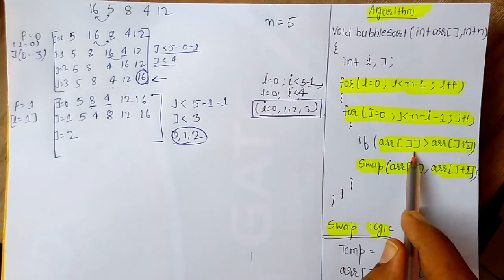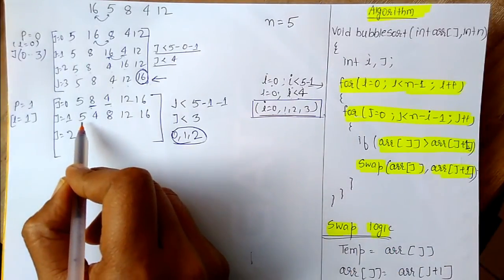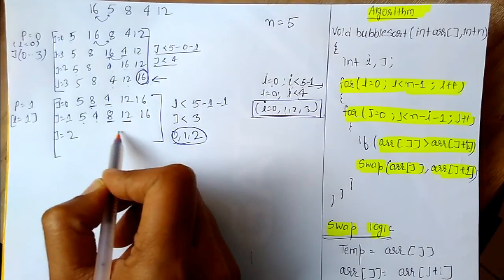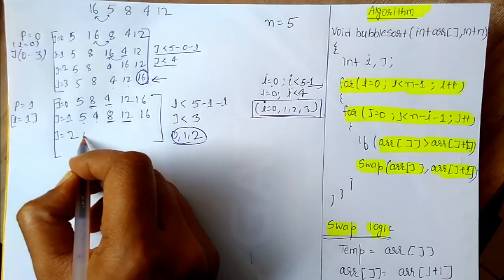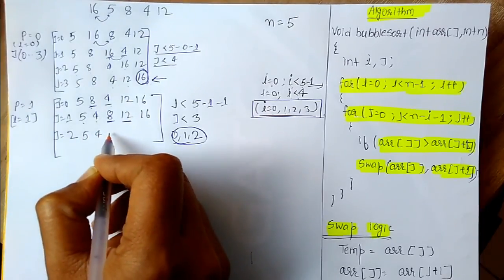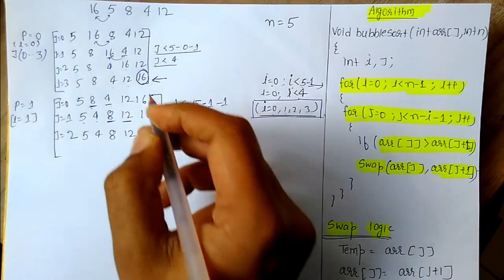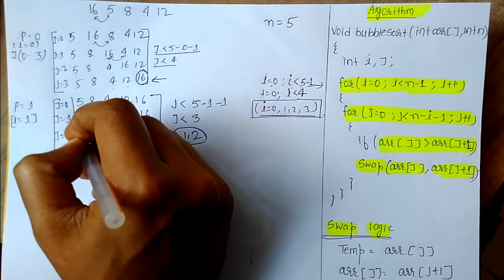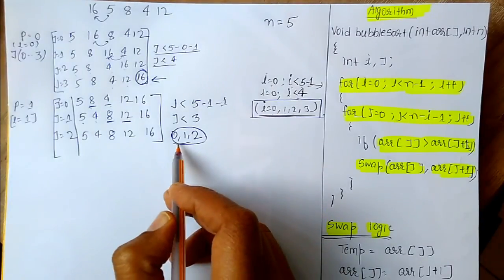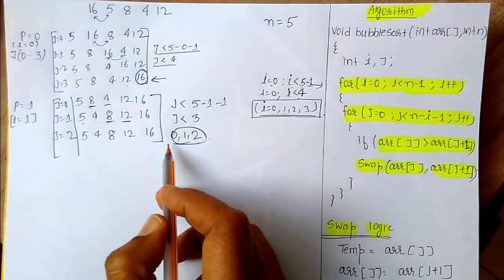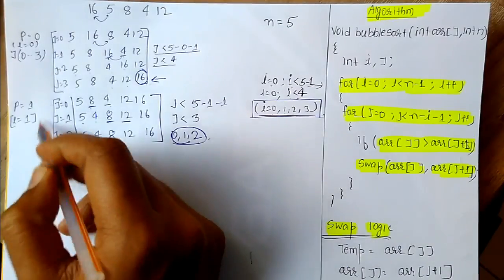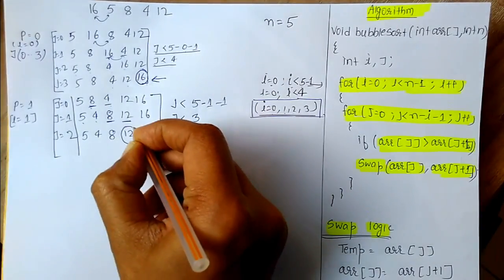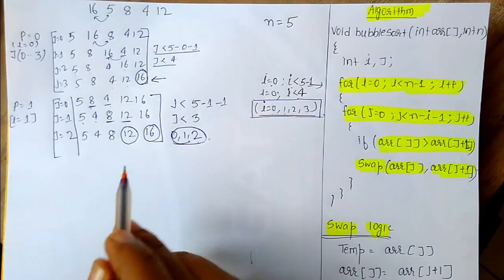For j equal to 2, we check array[2] against array[3]. Array[2] is 8 and array[3] is 12 — it is not greater, so we write it as is: 5, 4, 8, 12, 16. j only runs 3 times — for values 0, 1, and 2 — which are already done. So 16 was already fixed, and now 12 is also fixed. These are the two elements we have calculated. Now we will move to pass 2.